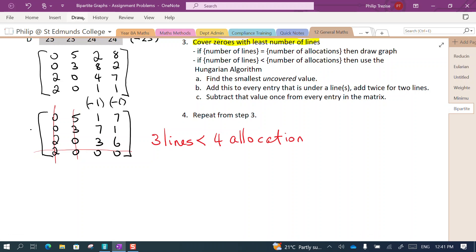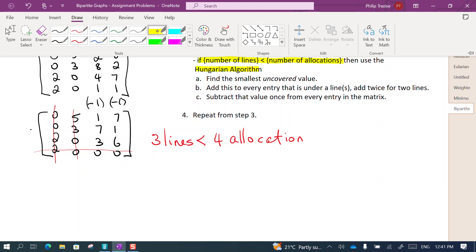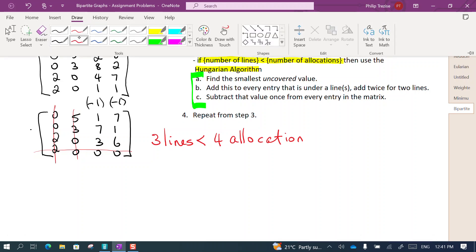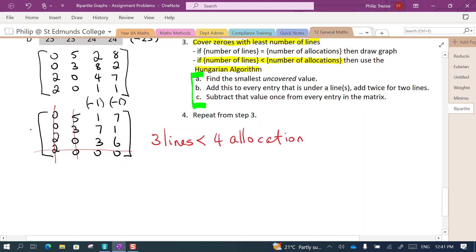Now that means that I'm down here. The number of lines is less than the number of allocations. I need to use the Hungarian algorithm. The Hungarian algorithm is this set of steps here. So let's follow this: find the smallest uncovered value.